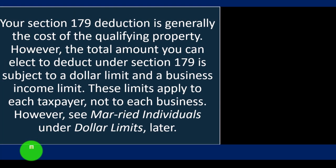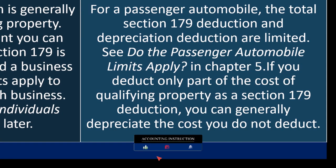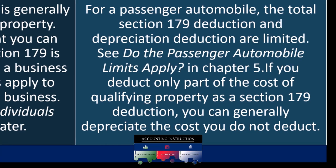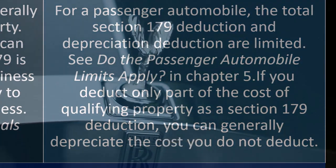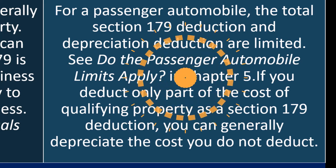Software helps us apply these in practice, but we want to have a general idea of them so we can discuss them when talking to clients. These limits apply to each taxpayer, not to each business. However, see married individuals under dollar limits later. For a passenger automobile, the total Section 179 deduction and depreciation deduction are limited. The IRS is concerned that people are buying quite expensive automobiles when they don't need them for a business purpose — if you're just driving to a client's house, do you need a $150,000 car? Probably not. They might be skeptical that you're overdoing it on the luxury side rather than for genuine business use. So that's why they might limit the deduction for automobiles.